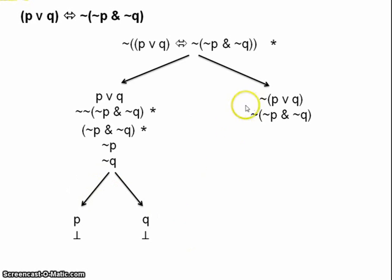Right, how about our other branch, our branch on the right? Well, again, pretty simple. We've got the negated disjunction up here. So we can derive not P and not Q. There we are.